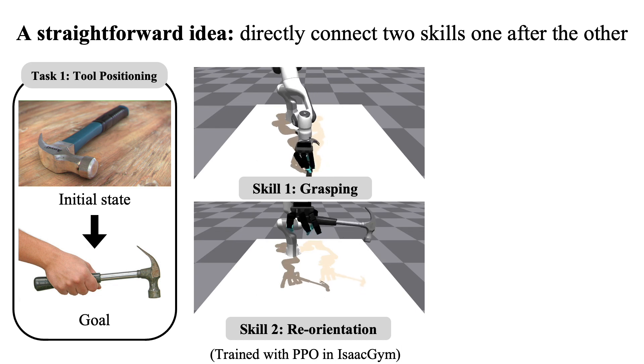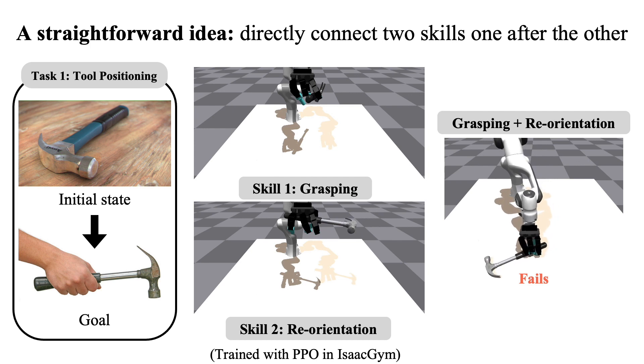We train two skills separately with PPO reinforcement learning algorithm and evaluate the performance by executing two skills in sequence. As demonstrated in this video, this method fails to achieve the goal.